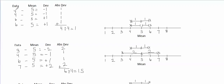We can see that this data value of 4 is 1 away from the mean of 5, because it's 1 below 5, so the absolute deviation is 1. This other 4 is also 1 away from the mean of 5, so its absolute deviation is also 1. Each absolute deviation is just the distance from that data value to the mean — the first, second, third, and so on.